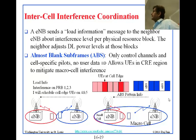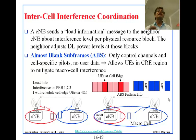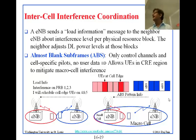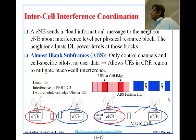The blue cell sends an ABS, and the red cell can even increase its power to talk to the red mobile. This is very similar to CoMP — the new concept introduced here is ABS, almost blank subframe. The load information process starts from the mobile reporting to its serving tower that it is also receiving signal from the neighbor tower. That information is then sent underground to the neighbor ENB, saying: I have a mobile subscriber at the edge and we need to coordinate.